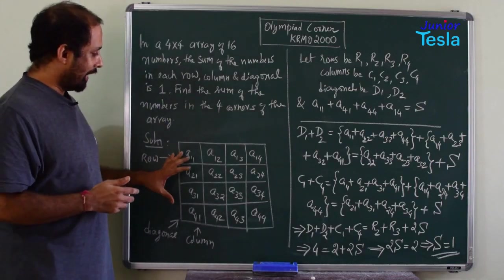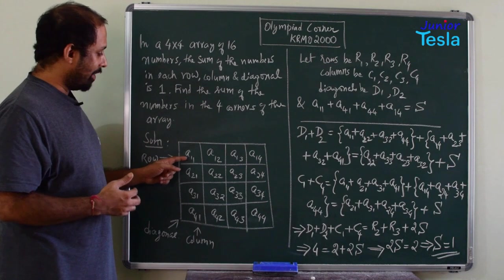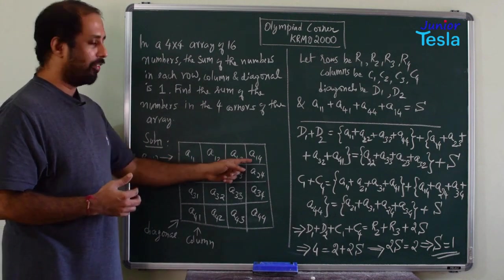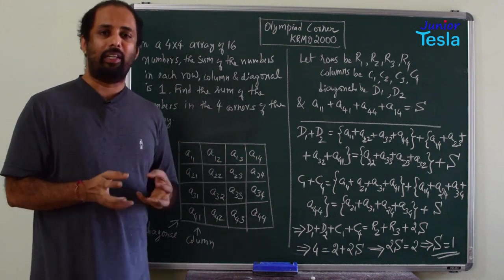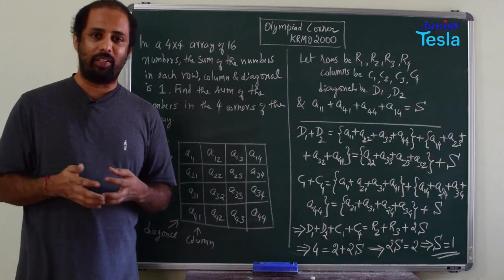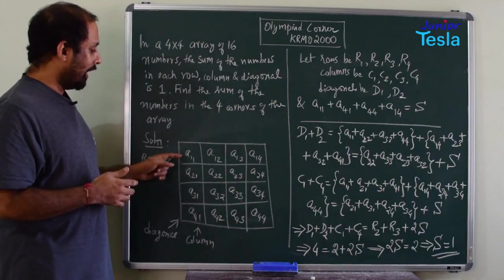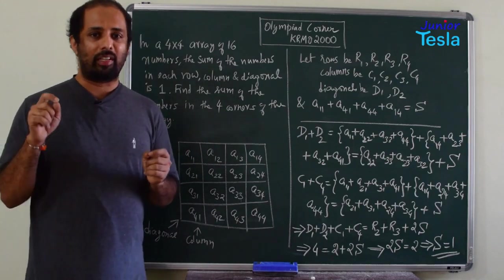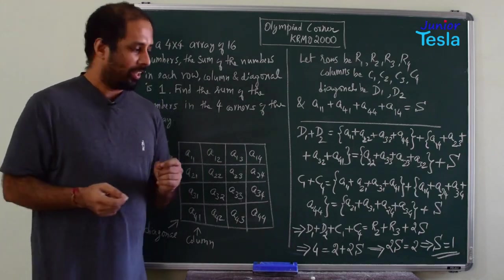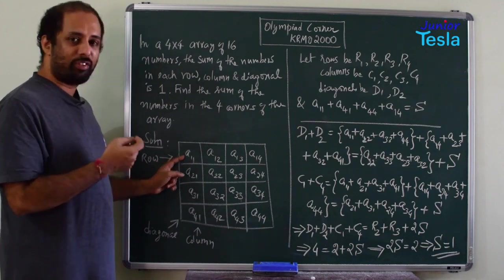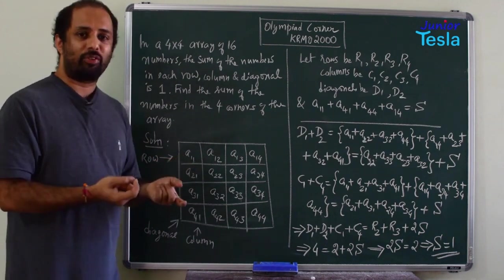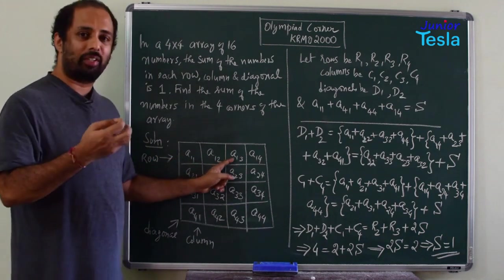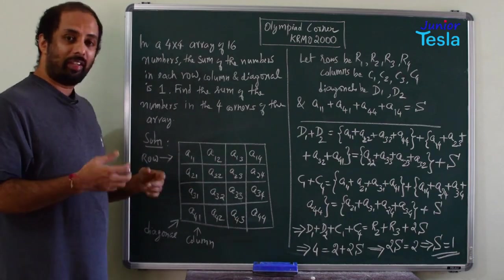Basically it is aij where ij is a suffix. It is in the ith row jth column. An entry which is in the ith row jth column is considered as aij. So a11 is the first row first column, a12 is the first row second column, a13 first row third column, a21 second row first column.